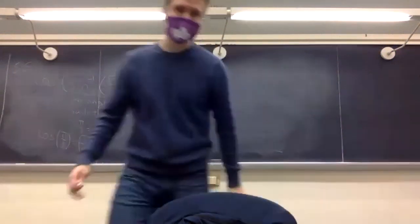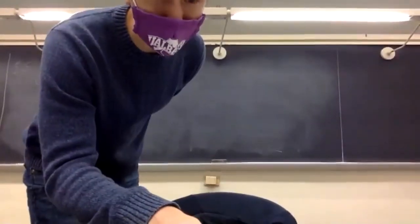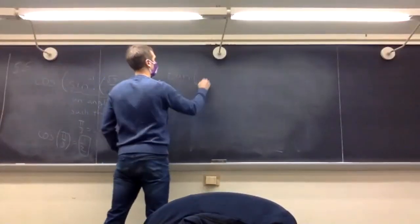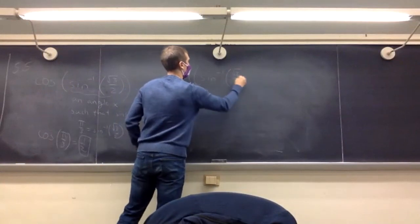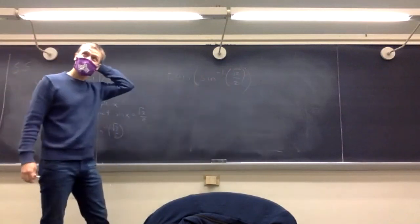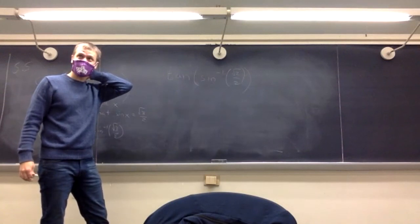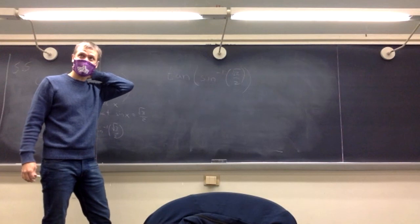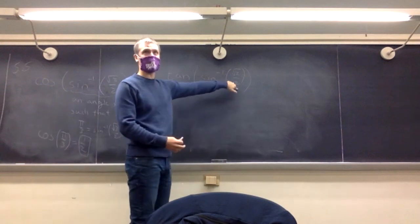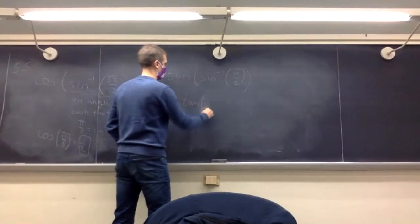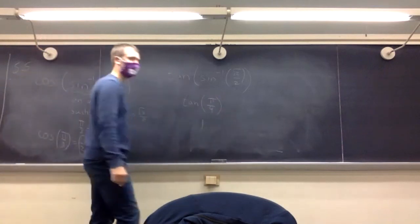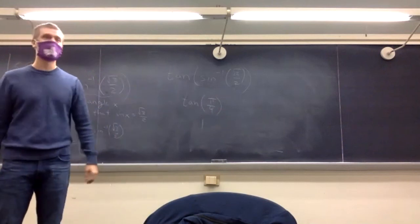One more problem: what angle gives you a y-coordinate of root 2 over 2? That's pi over 4 — this is the number that is both the x and y coordinate when you have an angle of pi over 4. The graphing section took longer than expected, so we actually went over today.